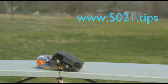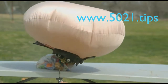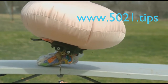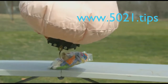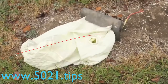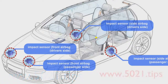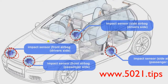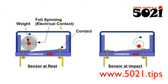This is the airbag. When a crash is detected, the control box sends a signal to the inflator. The inflator triggers a chemical reaction, and the nitrogen gas produced inflates and deploys the airbag rapidly.